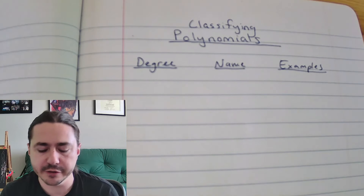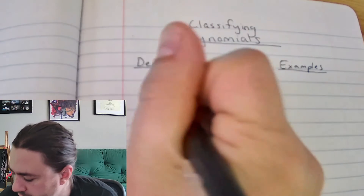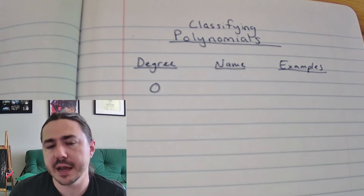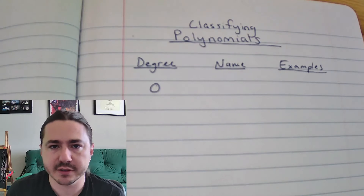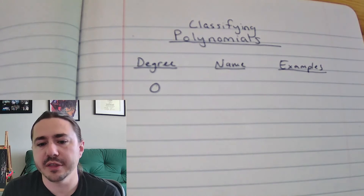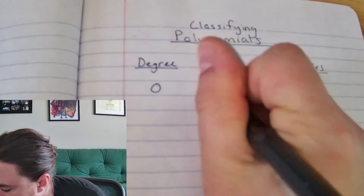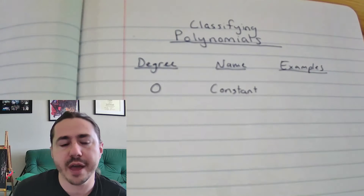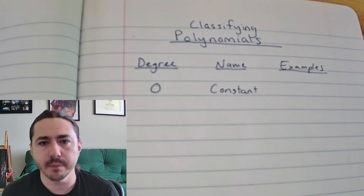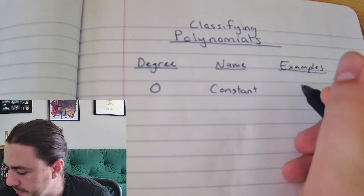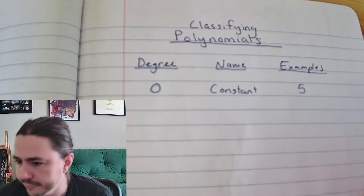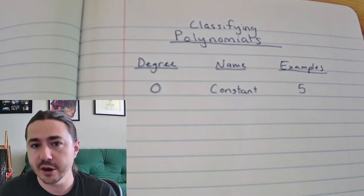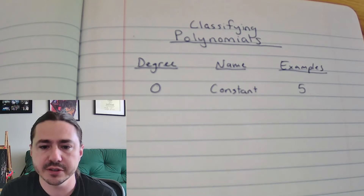You'll have a degree 0 polynomial anytime you actually don't have an x. So if there's no x in your expression, it is considered a constant — just a single number like 2, 3, 5, 6, 10, whatever. If there's no x at all in the expression, it's considered a constant and degree 0.